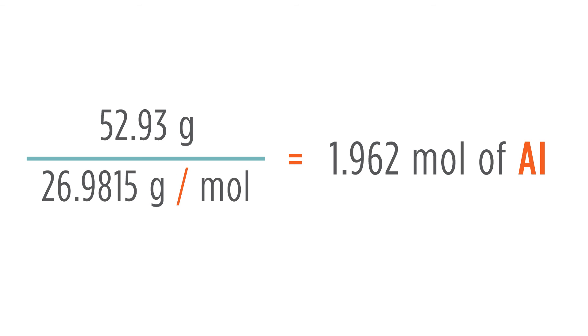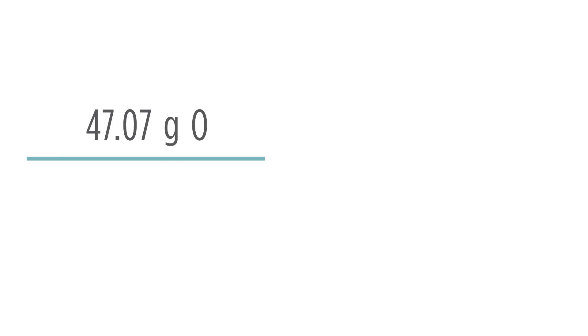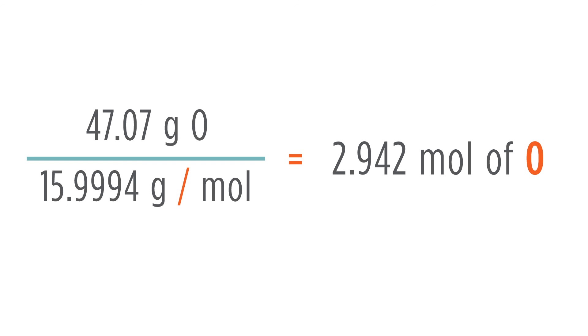Do the same thing for oxygen. 47.07 grams of oxygen divided by 15.9994 grams per mole of oxygen will give us 2.942 moles of oxygen.